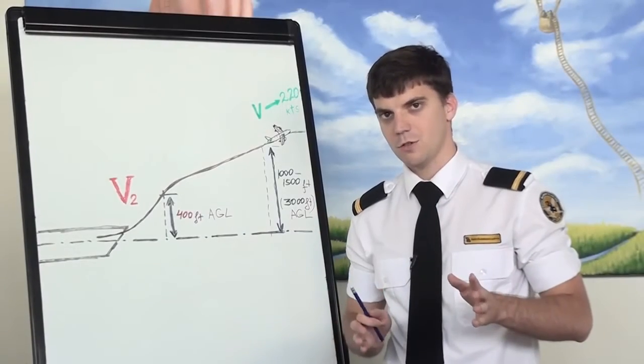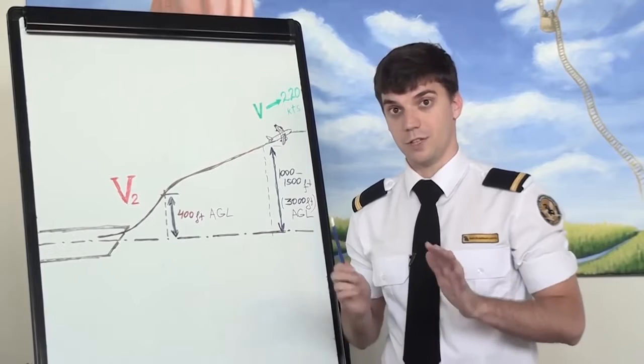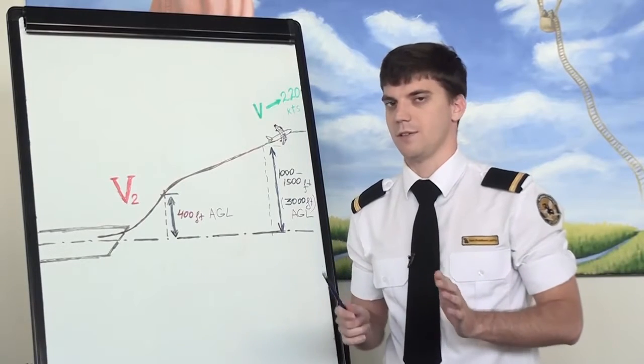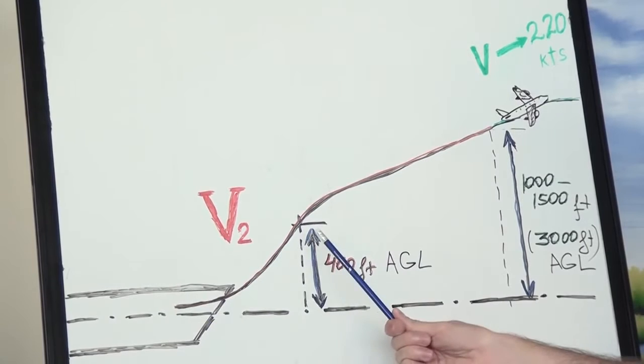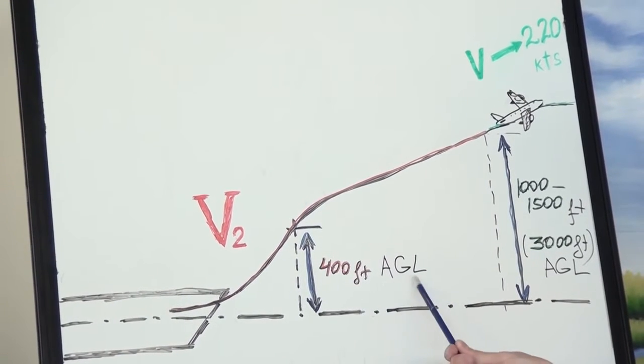To find an answer to this question, let's look at the example of take-off procedure for Boeing 737. After rotation and lift-off, there are no actions below 400 feet above ground level, except gear up on positive rate and silence the warnings.